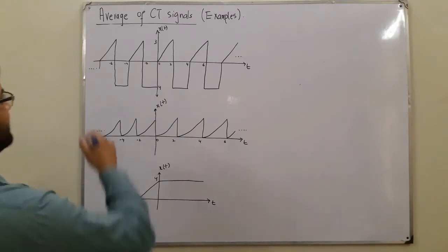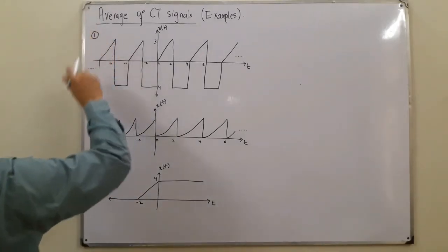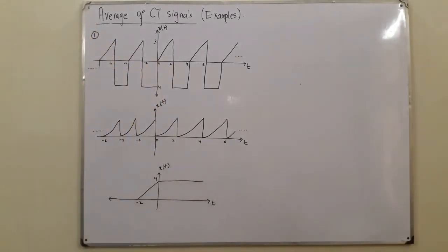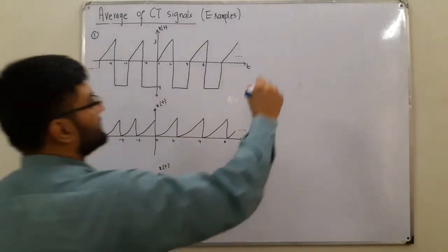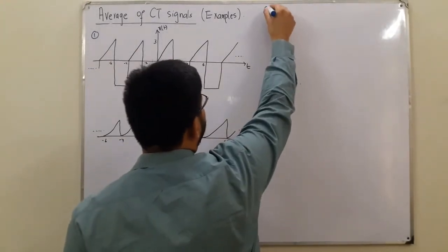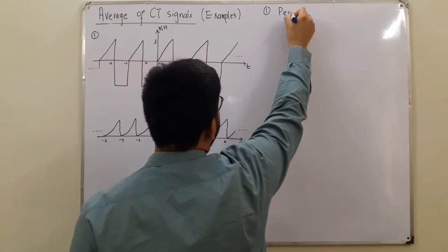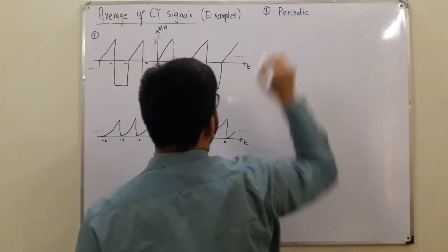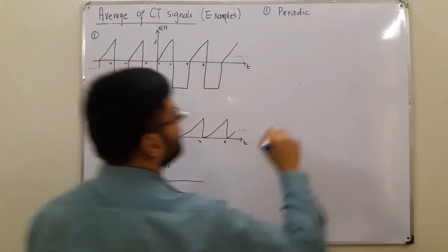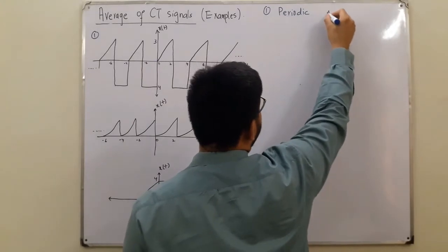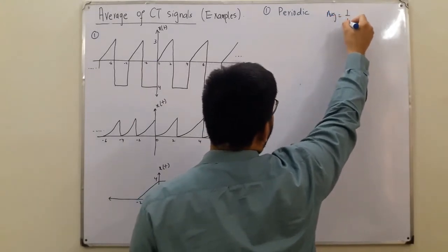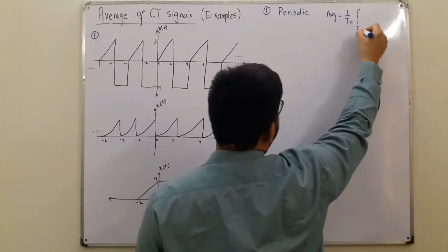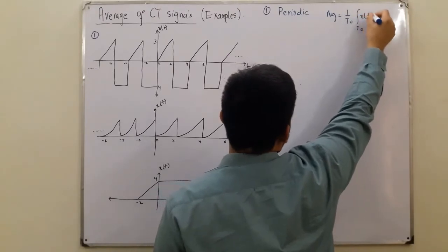This is the periodic signal. So what is the formula for calculating the average of a periodic signal? It's 1 over T naught, integrate over the period x of t with respect to t. This is the formula.